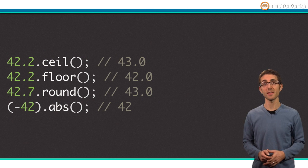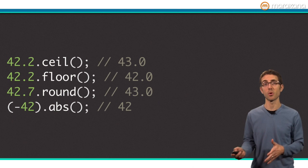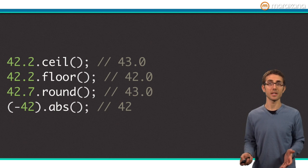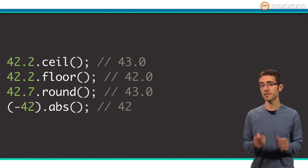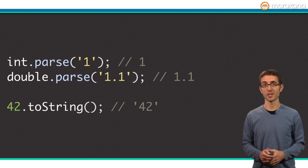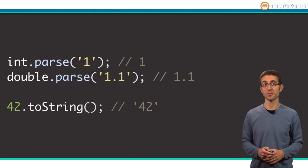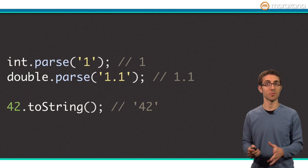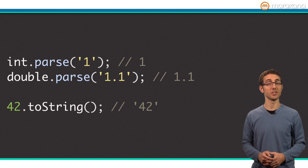The num class also defines methods such as absolute, ceiling, floor, round, and more. This makes sense because these are all methods you can call on a specific instance of a number. Use the static method parse from the int and double classes to convert a string to a number, and go the other way from number to string using good old toString.